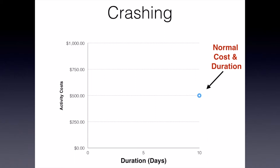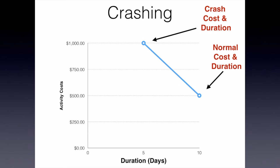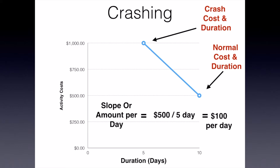What we're going to do is ask those people involved in estimating on our project: tell us, using normal techniques and normal conditions, if we added more resources to this task, how much could we shorten it by and how much would that cost? Let's say they come back and say we could shorten it to just five days, but it's going to double the price — it's going to cost $1,000 to get this activity done in five days. Assuming that information is correct, we can draw a line between these two points on our graph and calculate the slope of that line to give us the cost per day to crash or reduce this activity duration.